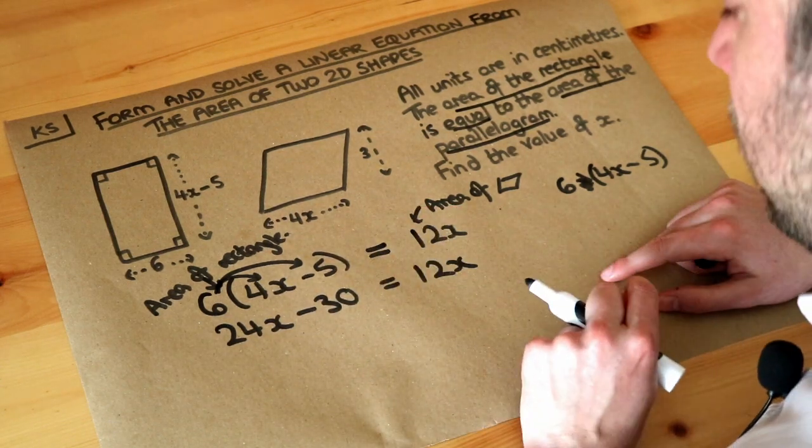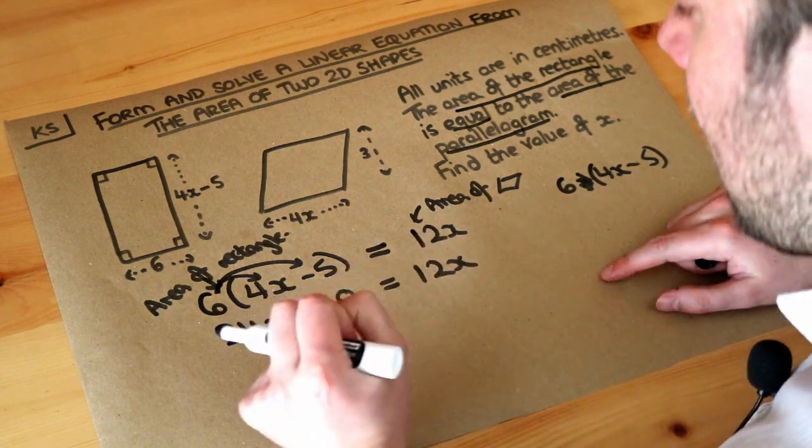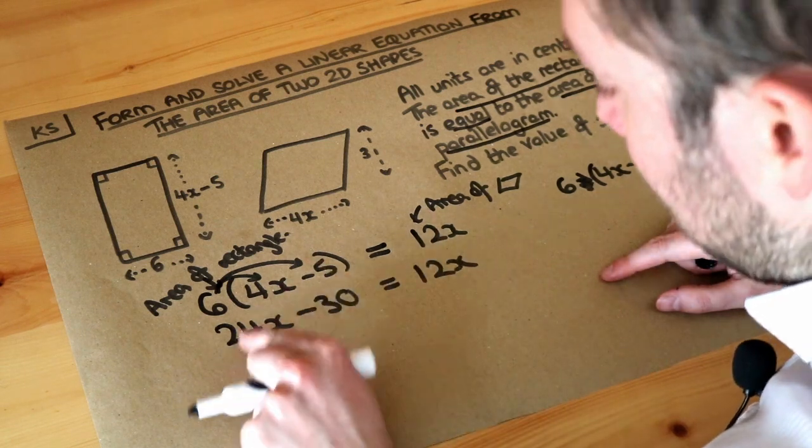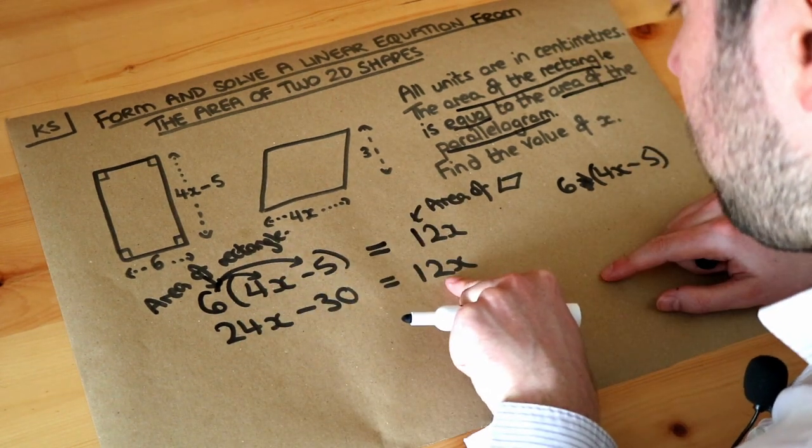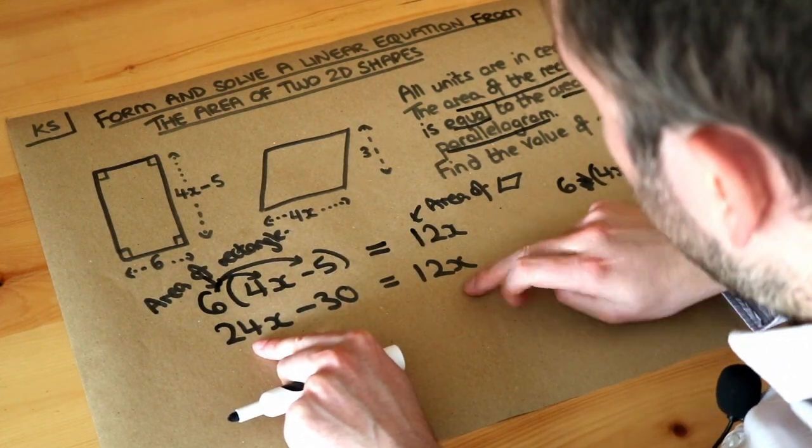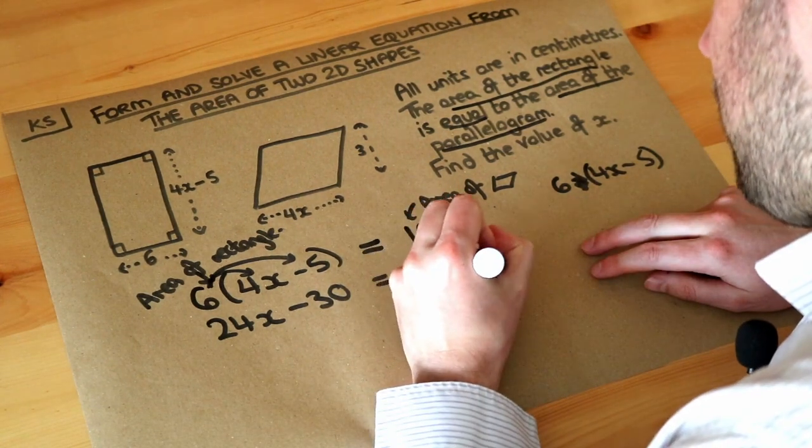Now, do you remember, when you've got an equation where you've got x terms and constant terms without an x, you want to get the x's on the side where you have more x's. So do we have more x's on the left-hand side, the 24x, or the right-hand side, 12x? We've got more x's on the left, so we therefore want to get rid of the x's on the right. So to get rid of that, you can just minus 12x from both sides.